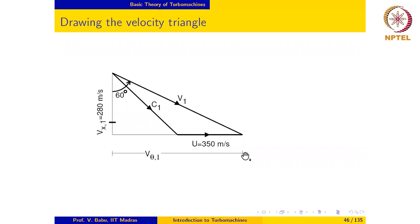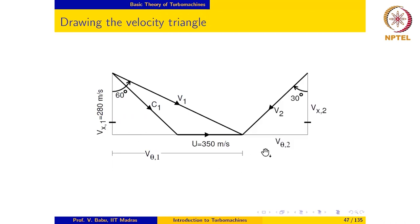Notice that this is Vθ1 and Vx1 is given. The blade angle beta1 is also going to be positive, as C1 is in the counterclockwise direction from the reference direction. The flow angle at the exit is given to be minus 30 degrees, so we draw the absolute velocity vector at the outlet at an angle of 30 degrees in the clockwise direction from the reference direction. It is also given that the axial velocity remains constant.